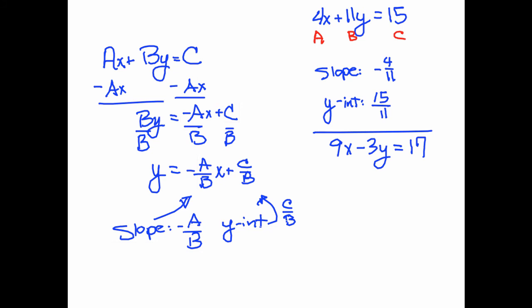In this case, a is 9, b is negative 3 because of the minus sign, and c is 17. So we can compute the slope as negative a over b. This is negative 9 over negative 3. 9 over negative 3 is negative 3. The opposite of negative 3 is 3, so the slope here is 3. And the y-intercept is 17 divided by negative 3, or negative 17 thirds.